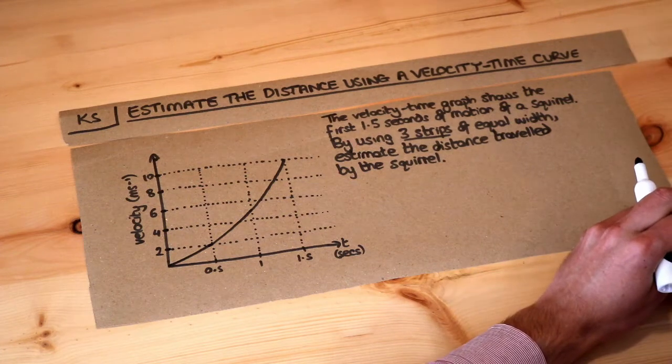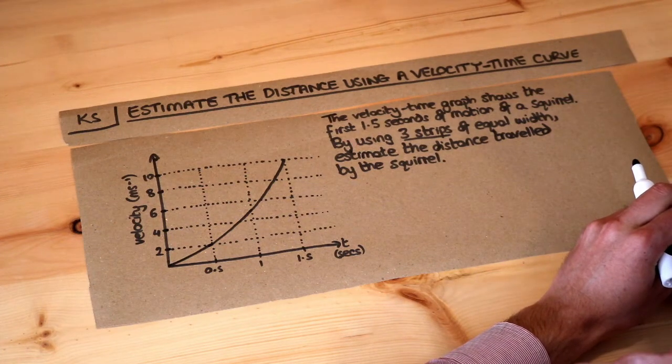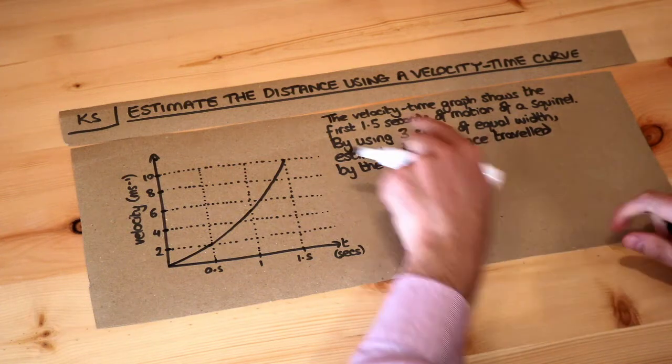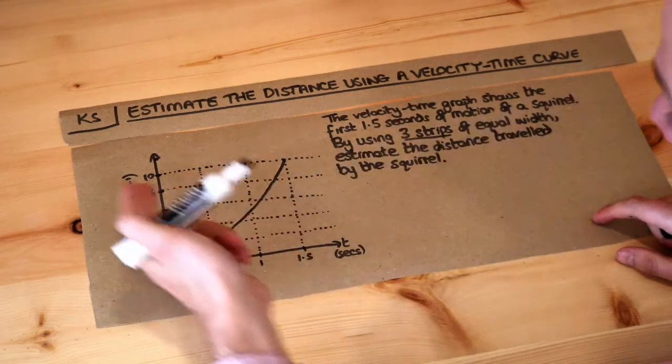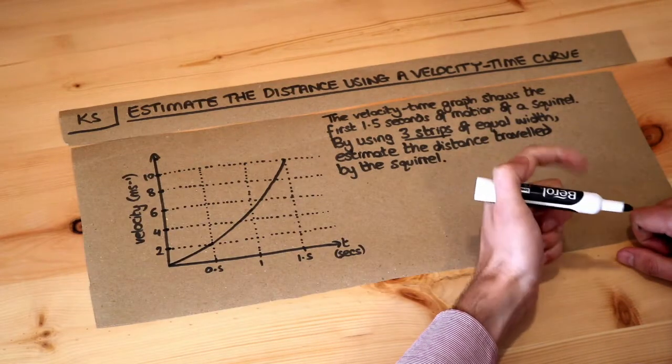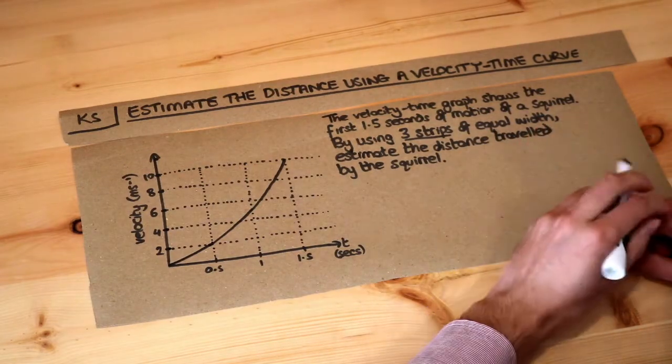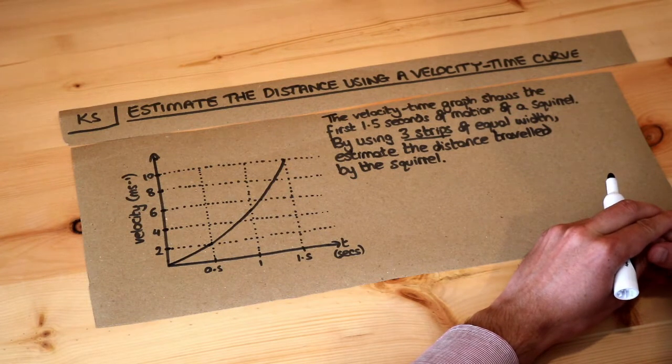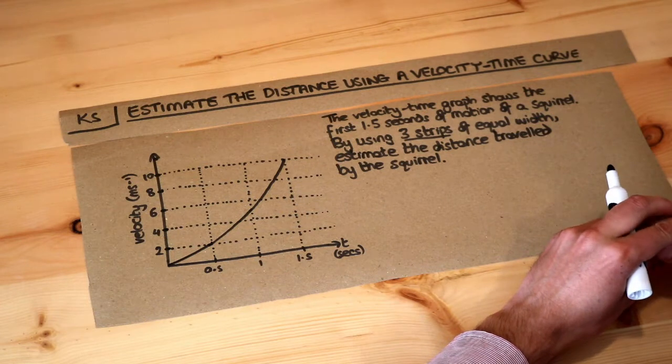Hello and welcome to Dr. Ross Mack's key skill video on estimating the distance using a velocity-time graph. Let's read the question. The velocity-time graph, or speed-time graph as it's sometimes known, shows the first 1.5 seconds of motion of a squirrel. By using three strips of equal width, estimate the distance traveled by the squirrel.